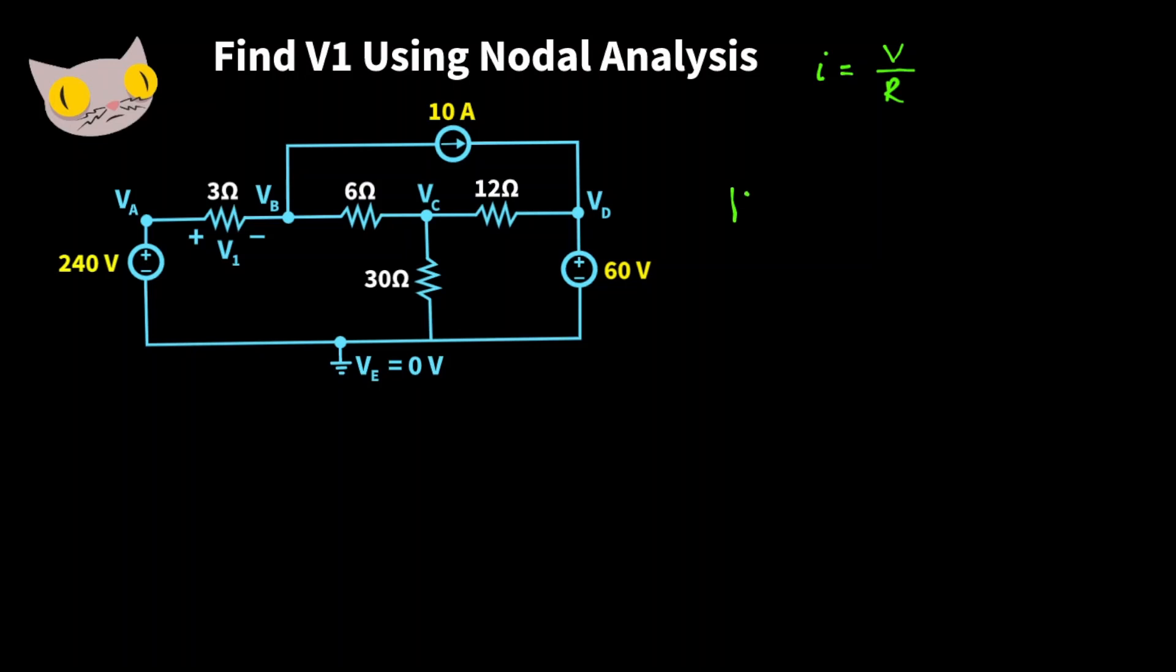Let's go ahead and use Kirchhoff's current law at node VB. So the current at VB is going to be VB minus VA over 3 ohms plus VB minus VC over 6 ohms plus the 10 amp current source. And that needs to be equal to 0.